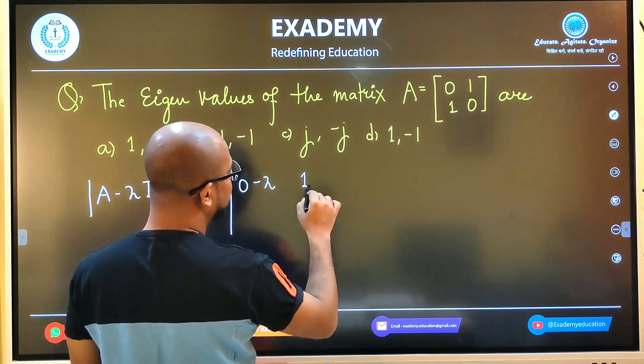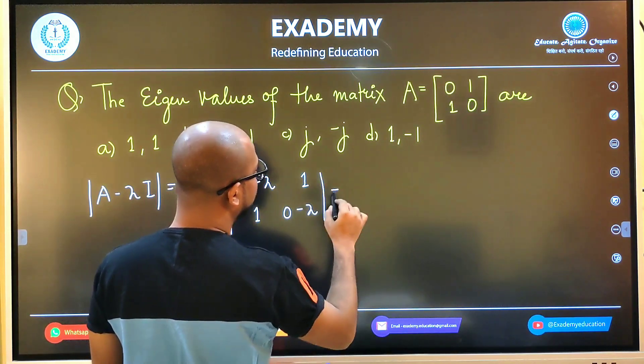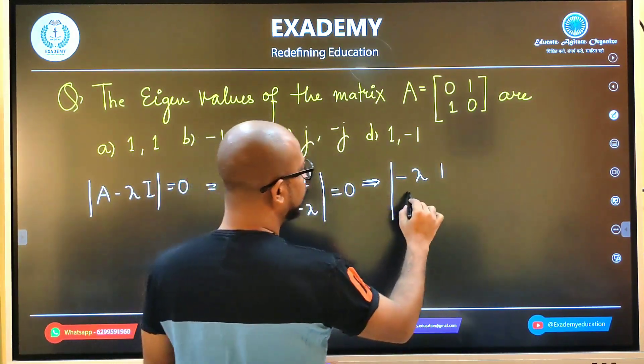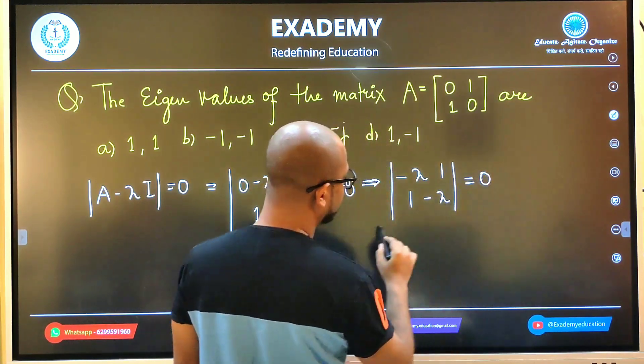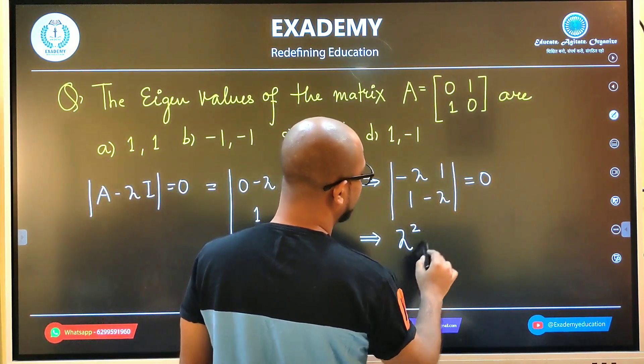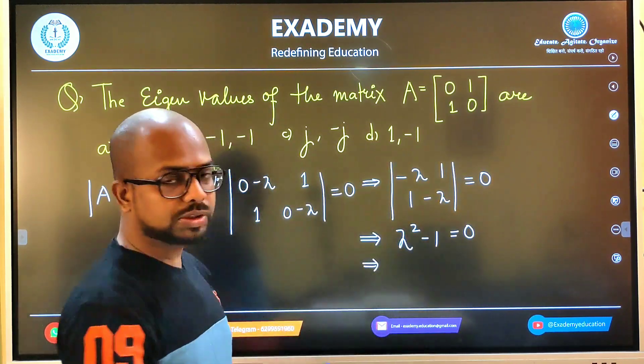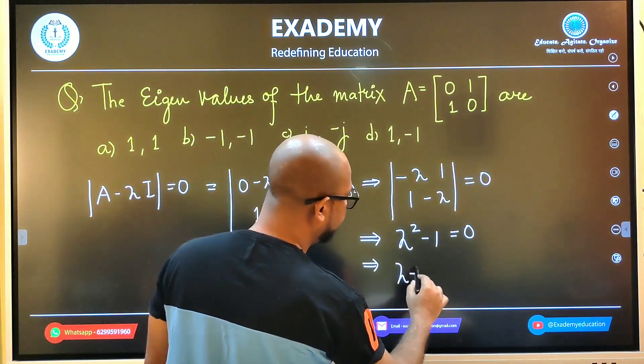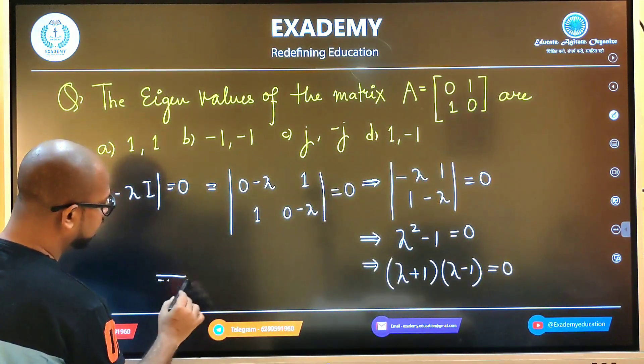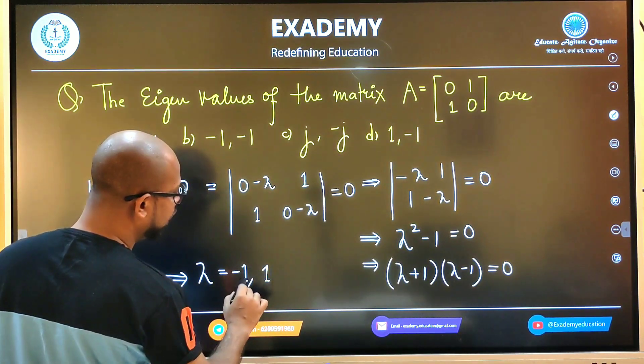To find eigenvalues, we use |A - λI| = 0. The diagonal elements become -λ and -λ, so we have [-λ, 1; 1, -λ]. The determinant gives us (-λ)(-λ) - 1 = 0, which means λ² - 1 = 0. Therefore (λ + 1)(λ - 1) = 0, giving λ = -1, 1. These are the eigenvalues.